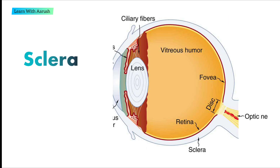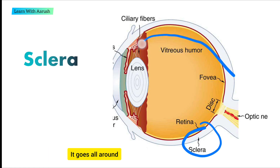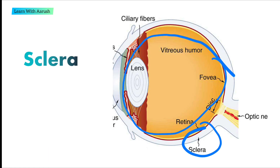In this picture, you can see that the sclera is surrounding the whole eyeball. It goes all around, and it also protects the optic nerve.